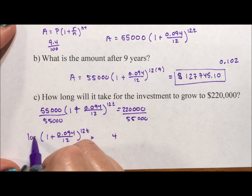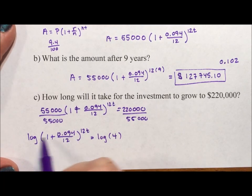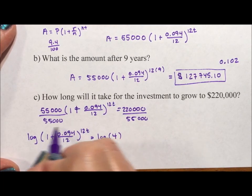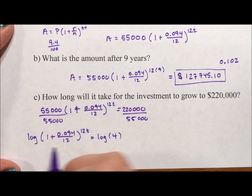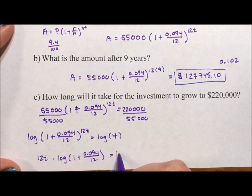Now I'm going to take the log of both sides because we use logs to control exponents. And if you take the log of both sides, what happens is this 12T can come out front as a multiplier. So that I have 12t × log(1 + 0.094/12) = log(4).